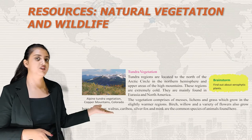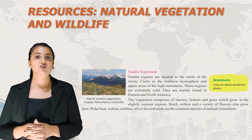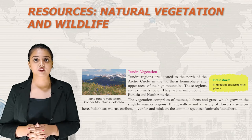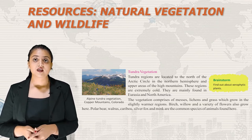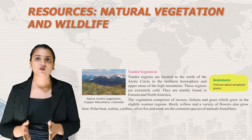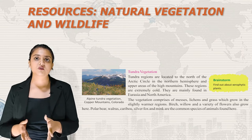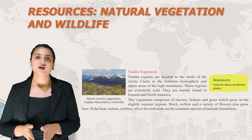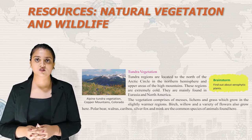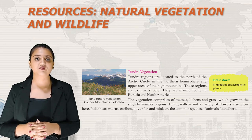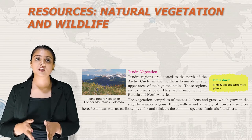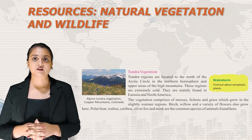Tundra regions are located north of the Arctic Circle in the northern hemisphere and in upper areas of high mountains, mainly in Eurasia and North America. These regions are extremely cold. Vegetation comprises mosses, lichens and grasses which grow in slightly warmer areas. Birch, willow and a variety of flowers also grow here. Polar bear, walrus, caribou, silver fox and mink are common species found here.